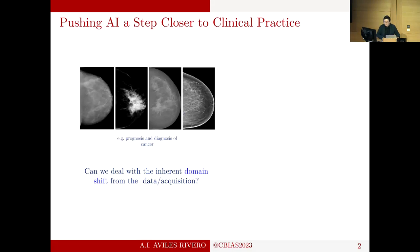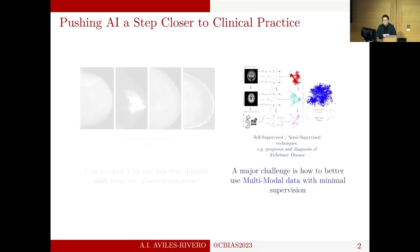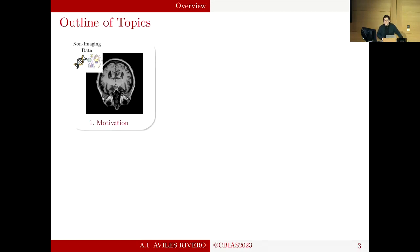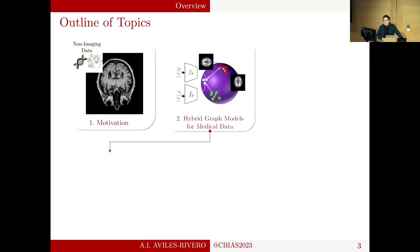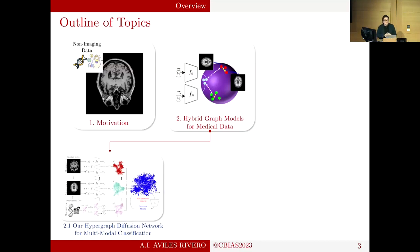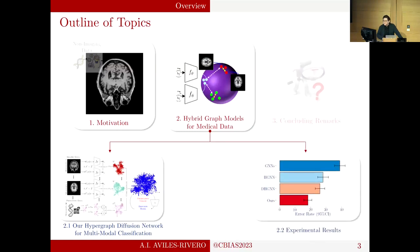Today's talk will be about multimodal data — not only medical image data but how we can use other types of data sources. This talk is divided as follows: first I'll give motivation about the need for new algorithmic approaches in the era of big data; then I'll delve into a case study about hypergraph diffusion networks, showing how we can use imaging and non-imaging data; then experimental results; and finally closing remarks.